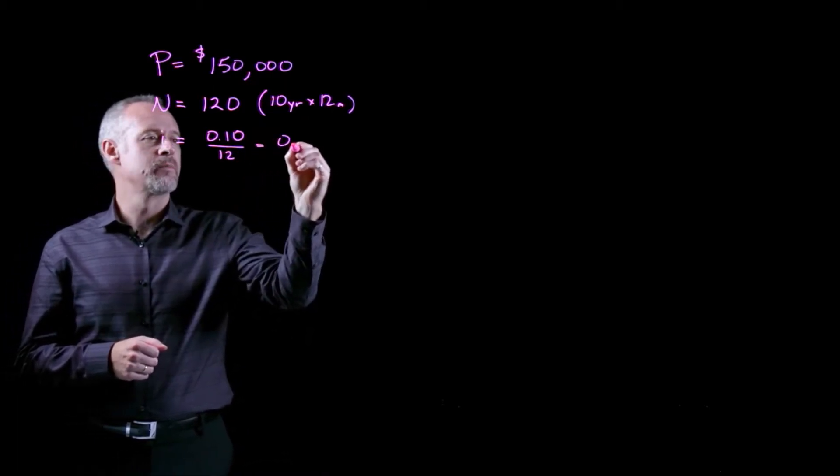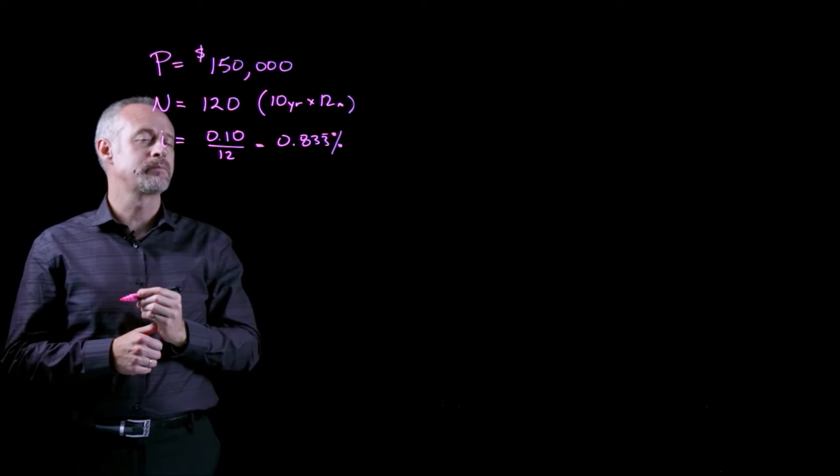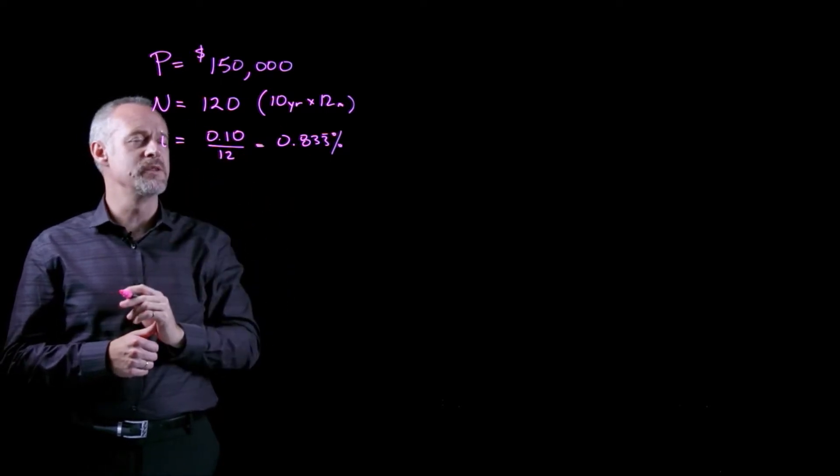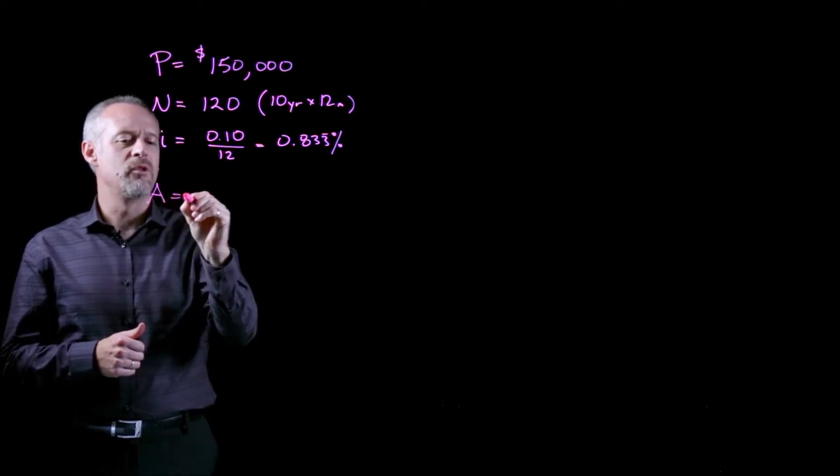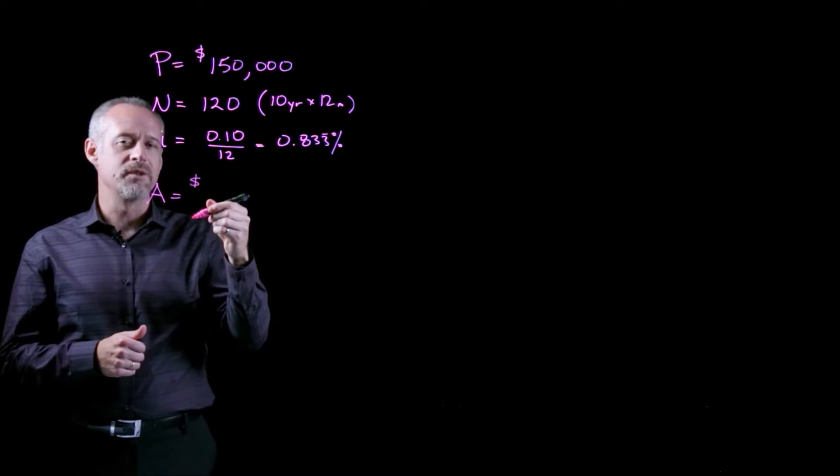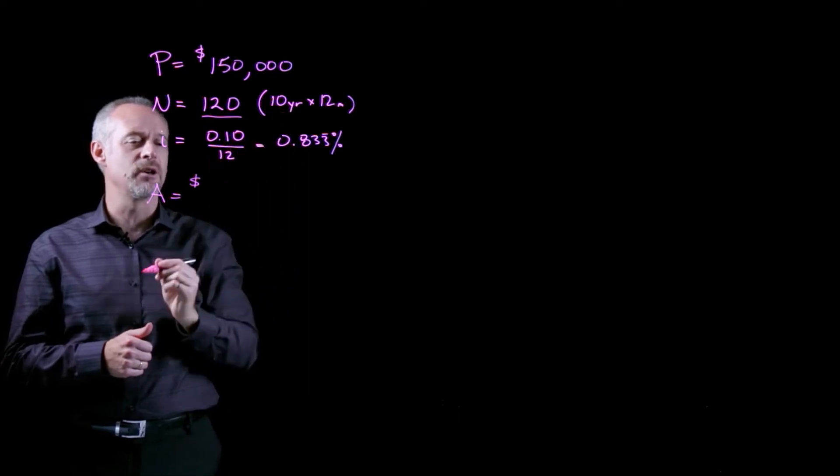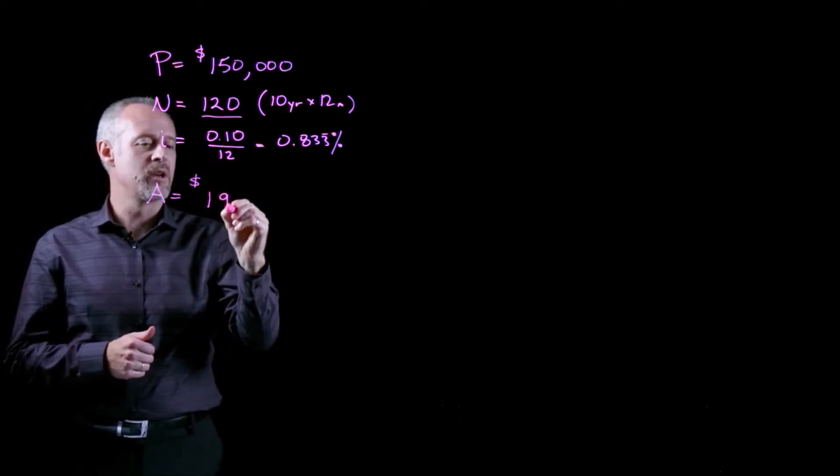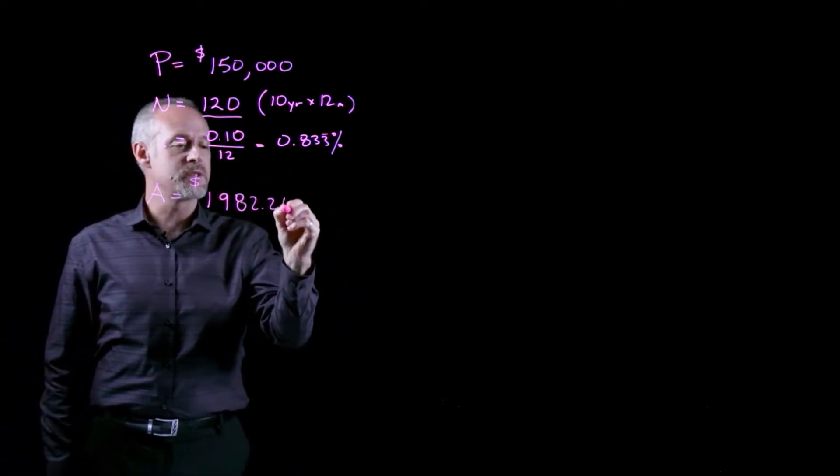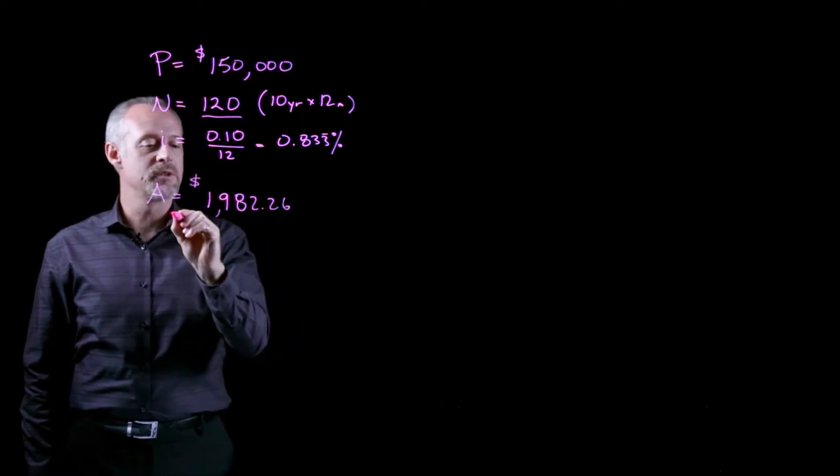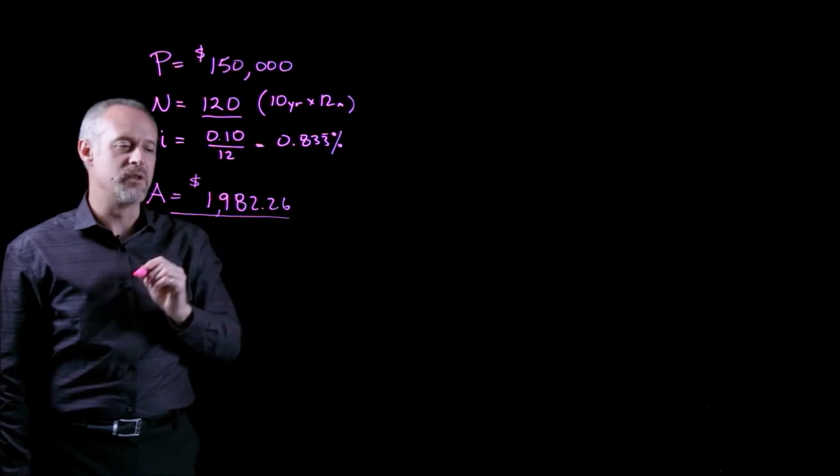When we used the concept of equivalence, we came up with a value of the mortgage payments, the annuity that was equivalent to the $150,000 over the amortization period of 10 years, with a monthly payment of $1,982.26. This was where we ended up in part one of this mortgage problem.